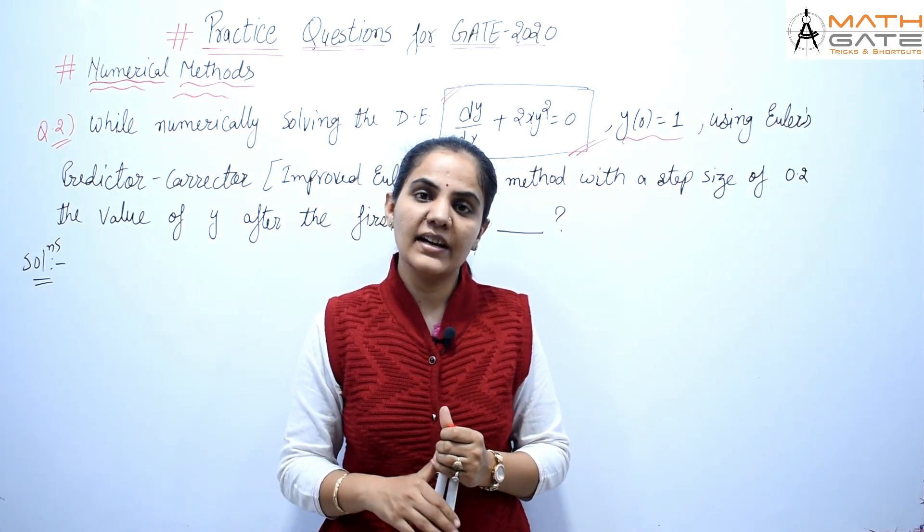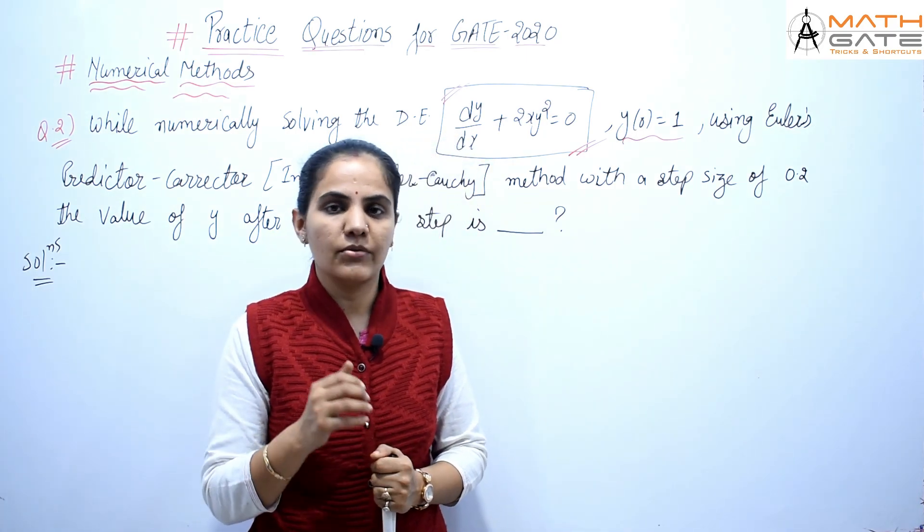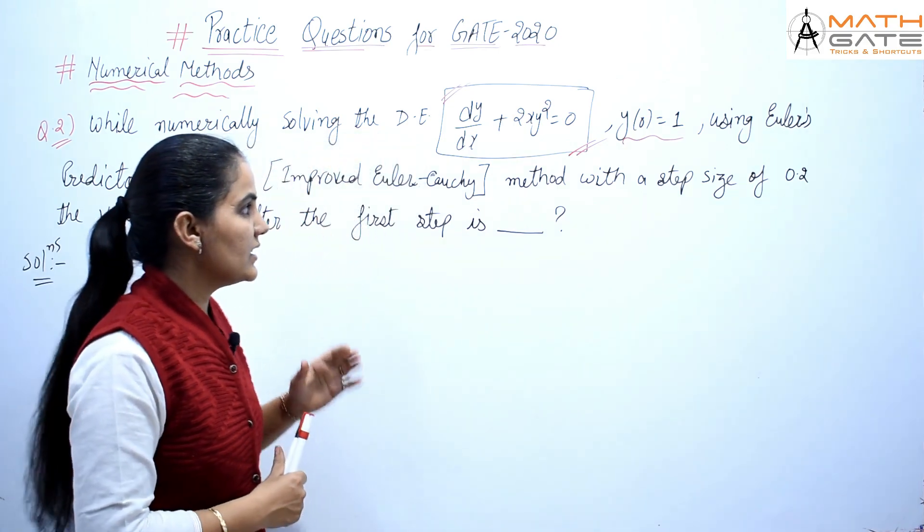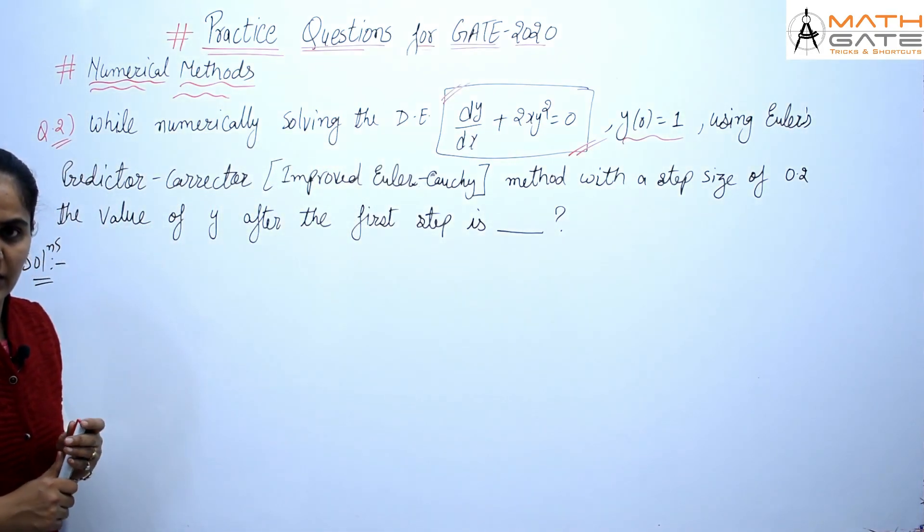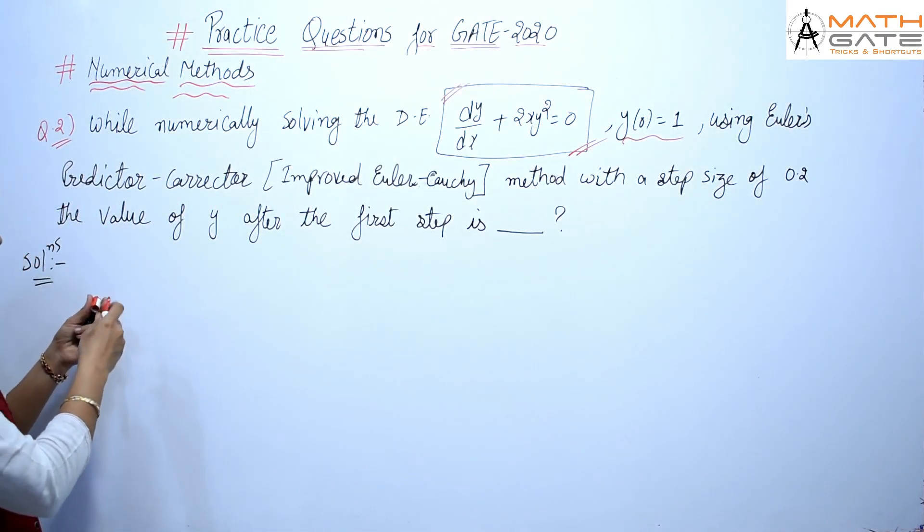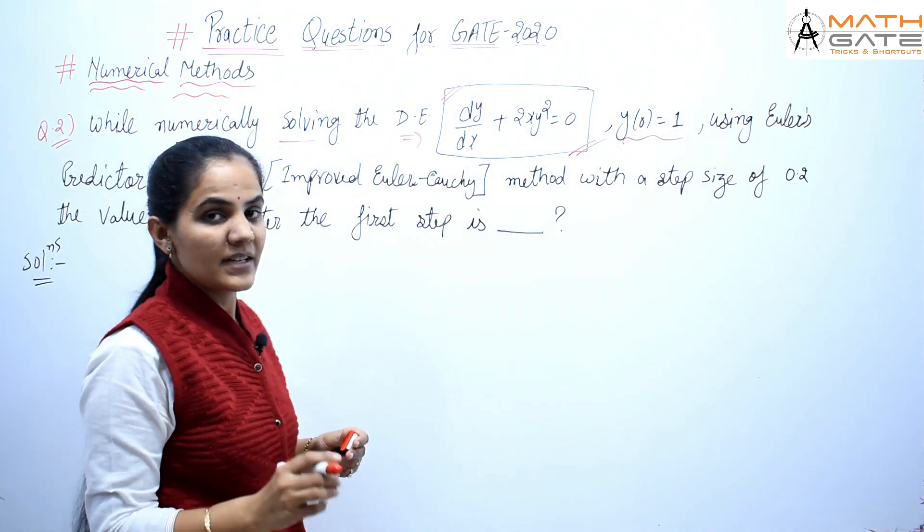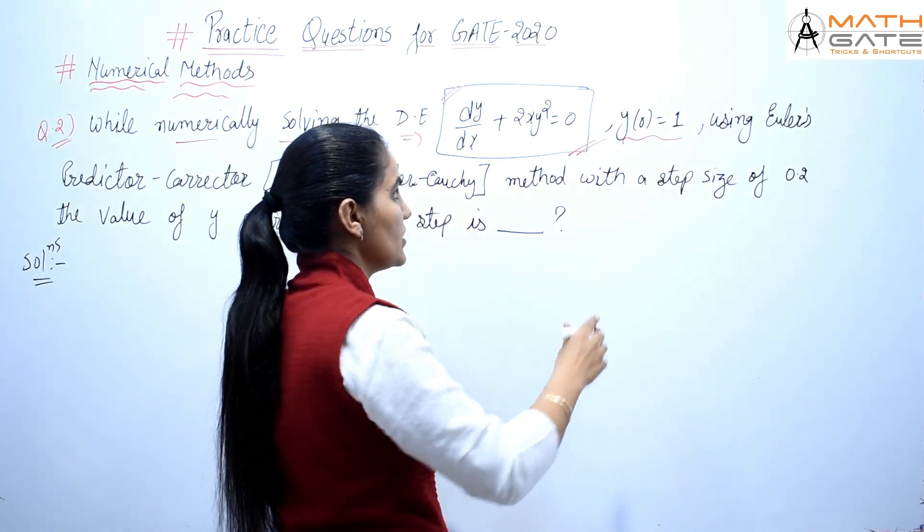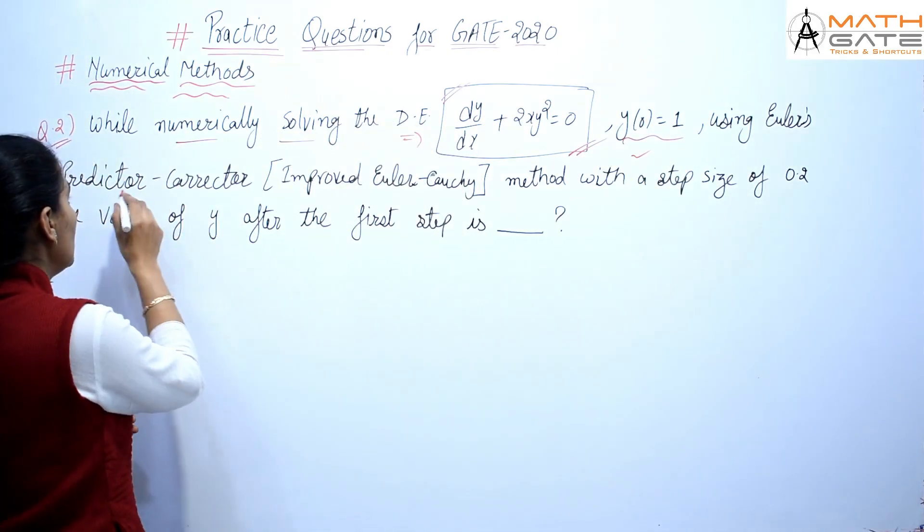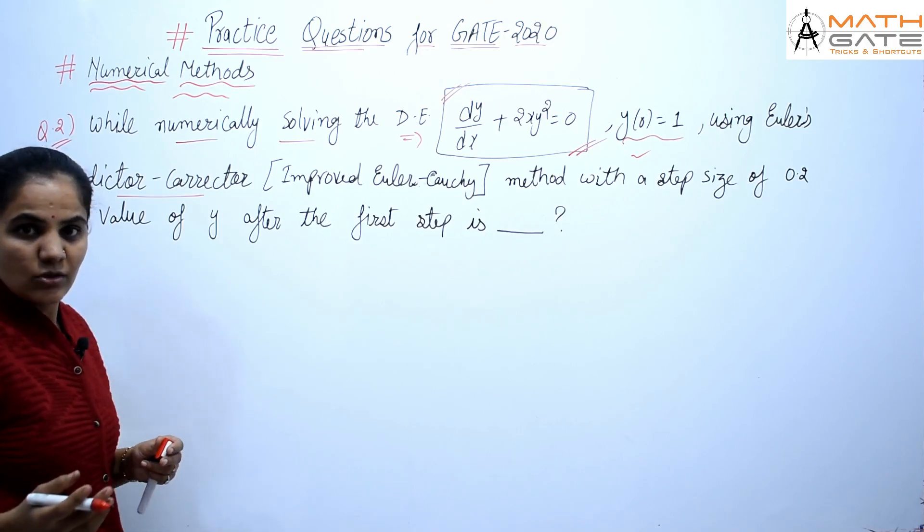Hello students, welcome to Math Guide. Let's discuss the next question on numerical methods. This question is from Euler's method or modified Euler method. The question is: while numerically solving the differential equation dy/dx + 2xy² = 0, y(0) = 1, using Euler's predictor-corrector method...